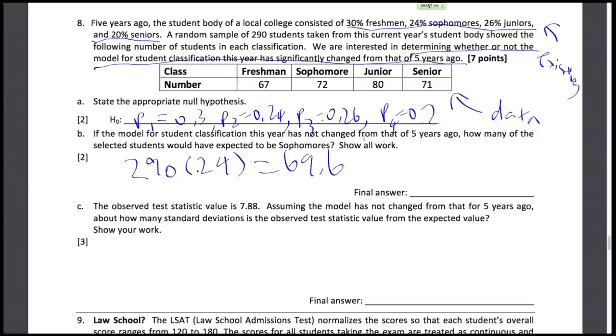Now the observed test statistic is 7.88. Assuming the model has not changed from five years ago, how many standard deviations away from the observed test statistic of 7.88 is the expected value of the test statistic?